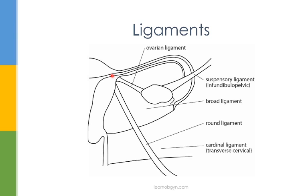Next we have the ovarian ligament, which connects the ovary to the uterus. Then we have the suspensory ligament of the ovary, which contains all the arteries, veins, nerves, and lymphatic vessels that supply the ovaries. A large ovary, especially one with a giant cyst on it, can actually cause the suspensory ligament of the ovary to twist, which leads to the blood supply being cut off and causing a condition called torsion of the ovary. This requires prompt surgical management to untwist the ovary in order to save it.